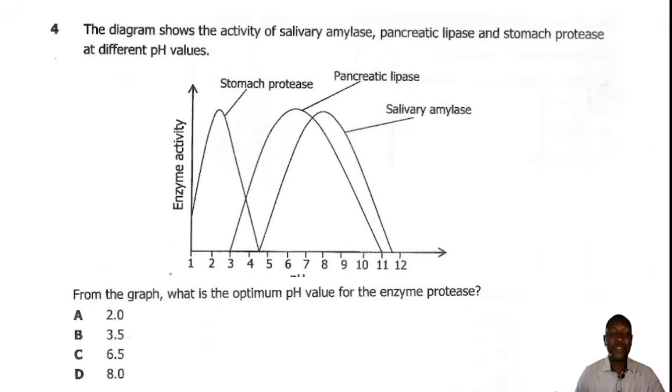Question 4. The diagram shows the activity of salivary amylase, pancreatic lipase, and stomach protease at different pH values. From the graph, what is the optimum pH value of the enzyme protease? So the optimum pH is the highest value or the highest level of activity. So for stomach protease, the pH is 2.0. The correct answer here is A.